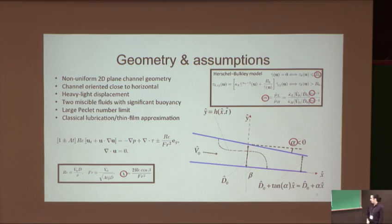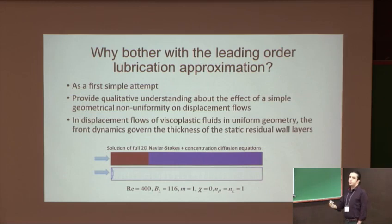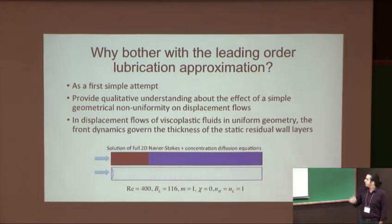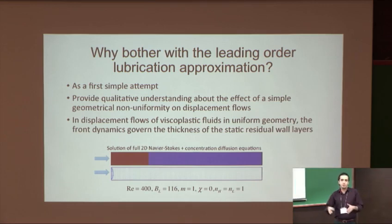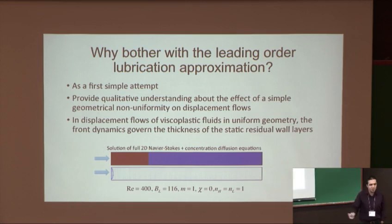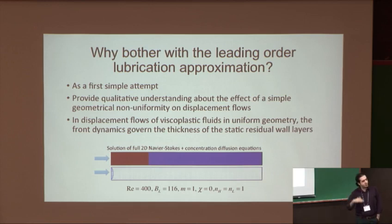So looking at the dimensionless parameters that govern this problem, there will be chi, the buoyancy number, two Bingham numbers of the two fluids, the viscosity ratio and the power line index. But I mentioned that we are going to use a leading order lubrication approximation for understanding about these flows, and we all know that this leads to paradoxical results which can be resolved by going to higher order terms.